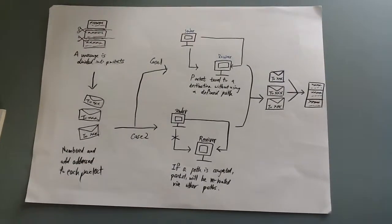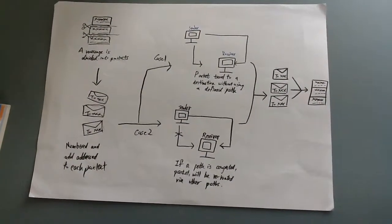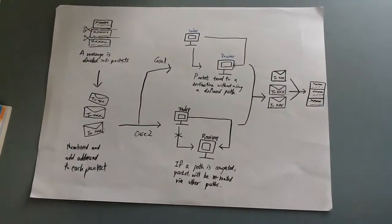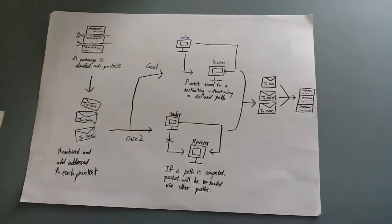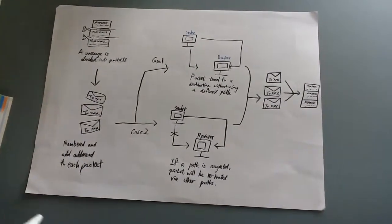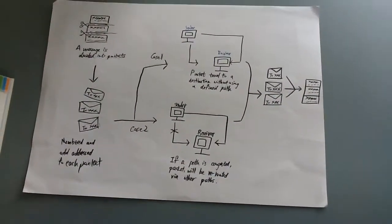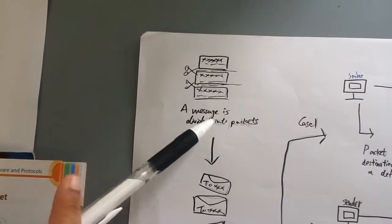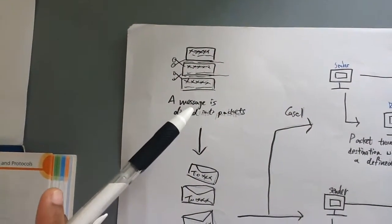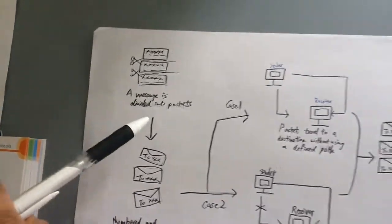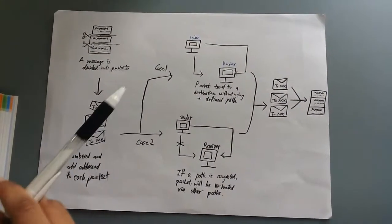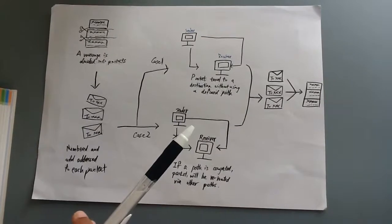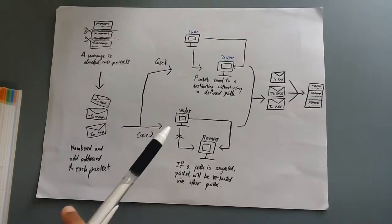I'll be talking about the Transmission Control Protocol, TCP, and Internet Protocol, IP. This is the diagram of how a message is transmitted using TCP/IP. Firstly, the TCP: to send a message, the message is divided into packets, one by one, and sent one by one to the receiver. When it reaches the destination, it reassembles the received data packets into a single data file, so that the receiver can read it.